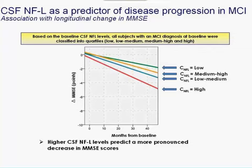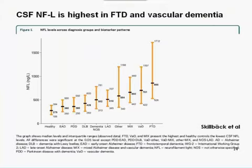When grouping individuals according to high, medium, or low concentrations of neurofilament light, those with the highest concentrations are those that progress the fastest in their cognitive deterioration over time, as approximated by the Mini-Mental State Examination score. Higher CSF neurofilament light levels predict a more pronounced decrease in MMSE scores, and we also saw a logarithmic association with longitudinal change in MRI data on brain atrophy.